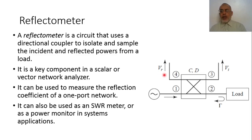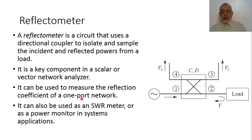By comparing the ratio of VR to V incident, we can determine the magnitude of the reflection coefficient. This allows the reflectometer to measure the reflection coefficient of a one-port network, and from the reflection coefficient we can also derive other parameters like the standing wave ratio.